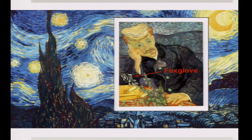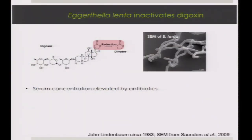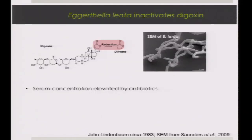Eggerthella lenta is a single gut actinobacterium commonly found in many people. In 1983 it was shown to be the only culturable organism capable of inactivating digoxin. Early work showed a downstream metabolite, dihydrodigoxin, cannot bind the sodium-potassium ATPase target — it's an inactive form found in a subset of patients. Administering antibiotics alongside digoxin elevates intact drug in serum, suggesting gut microbe involvement. Lindenbaum then proved E. lenta was capable of doing this in the lab.